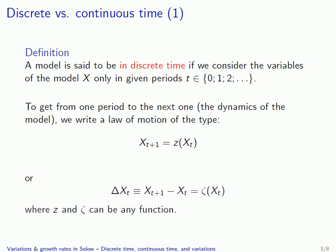Another way of writing this would be to write the law of motion as the variation in the variable, so delta x_t, which by definition is x_{t+1} minus x_t, as another function — here I wrote zeta of x_t. In any case, the zeta function can be any kind of function depending on the actual model.